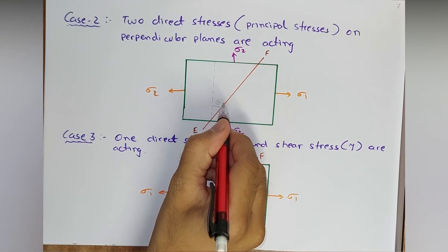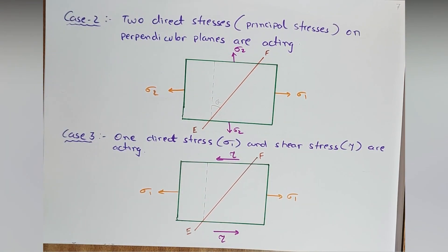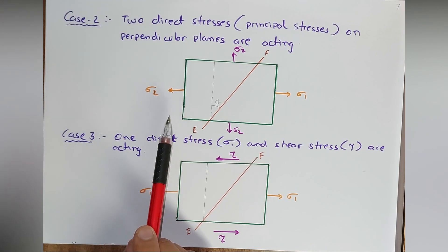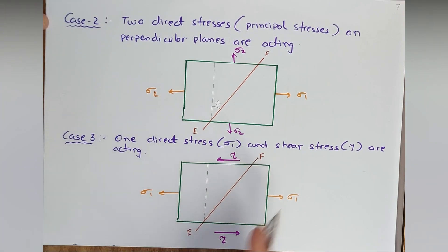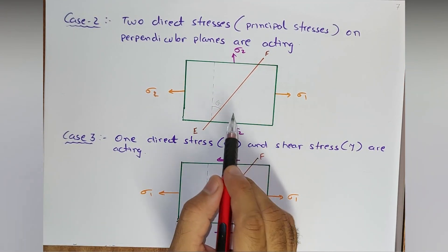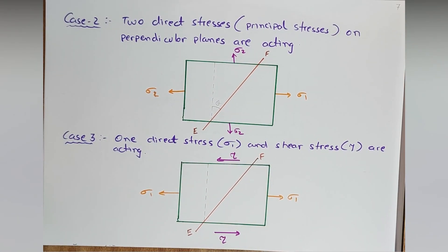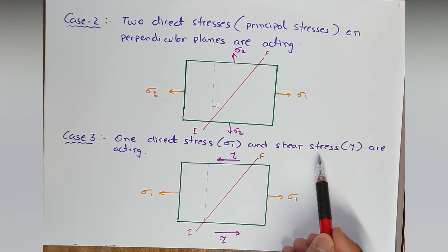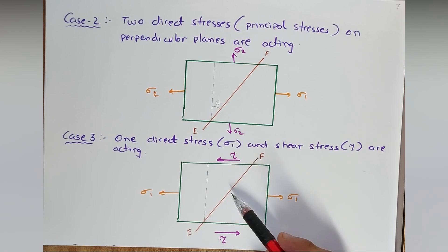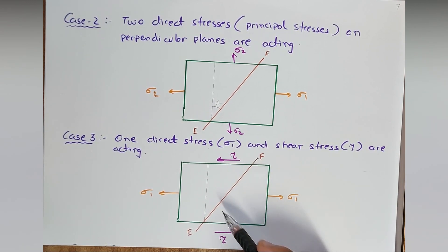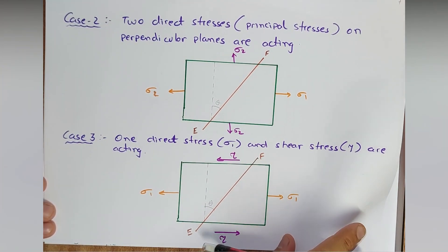The plane EF is at any angle theta from the vertical. In Case 2, sigma 1 and sigma 2 are perpendicular to each other — sigma 1 is shown in orange and sigma 2 in pink. Case 3: one direct stress sigma 1 (in orange) and shear stress tau (equal and opposite, in pink) are both acting, and we calculate stresses on plane EF at angle theta from the vertical.